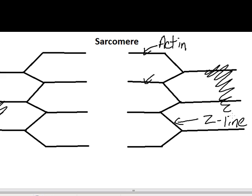Technically, one sarcomere is defined as Z-line to Z-line. So over here would be another Z-line, and from Z-line to Z-line, everything in the middle is that sarcomere. The thin filaments in black are actin.